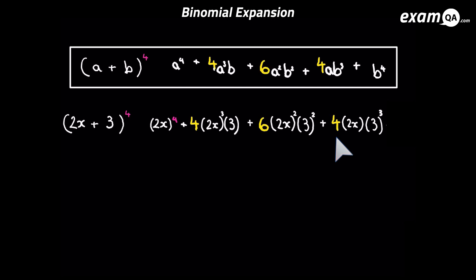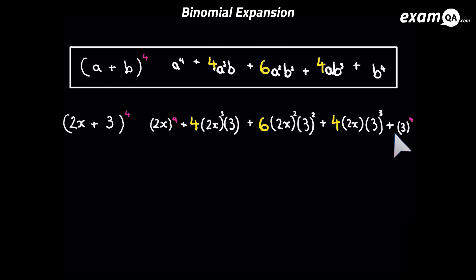Finally in the last term, 2x becomes non-existent because its power is 0, and the 3's power is raised to the highest power which is 4. The coefficient from Pascal's triangle is 1 here, so we don't need to put it in. I'd advise memorizing Pascal's triangle up to at least the row 1, 5, 10, 10, 5, 1. Otherwise you'll be using your calculator to work it out — and your calculator can tell you these numbers, though it does take longer.